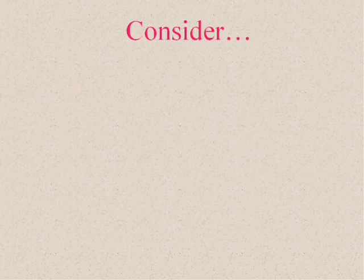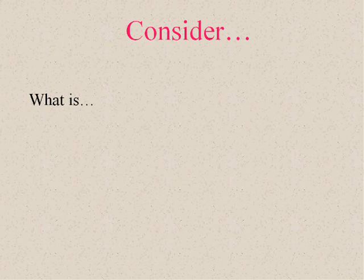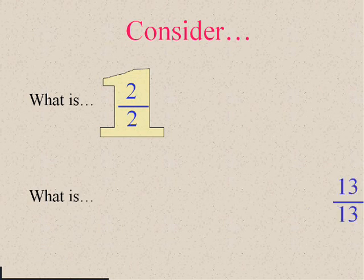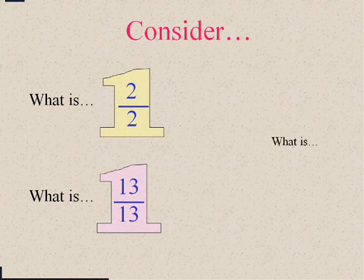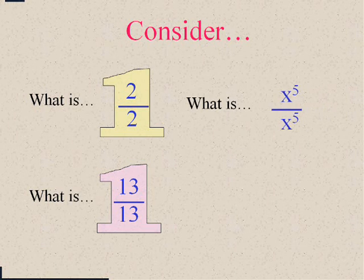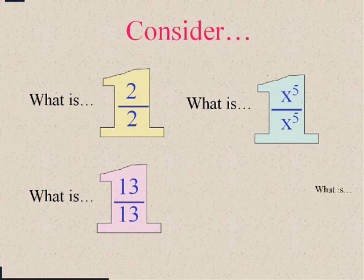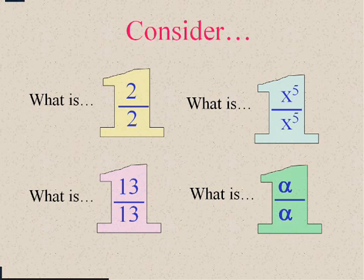Well, tell you what that means. Consider 2 over 2 is 1. 13 over 13 is 1. x to the fifth over x to the fifth is 1. And in fact, anything over itself is 1. As long as you have something in the top and in the bottom, you'll always be equivalent to the number one.